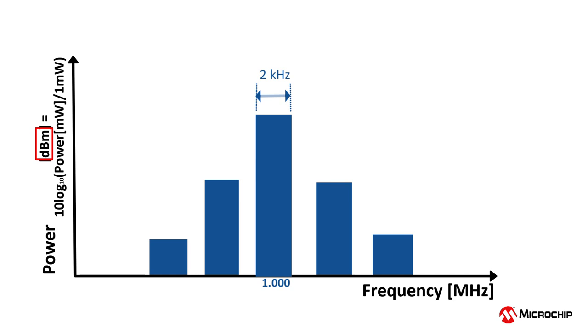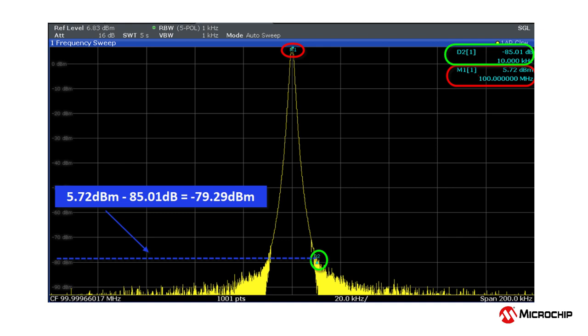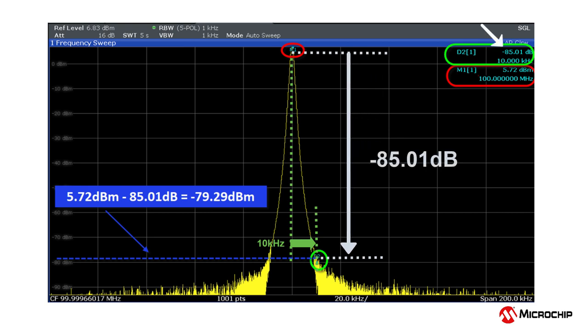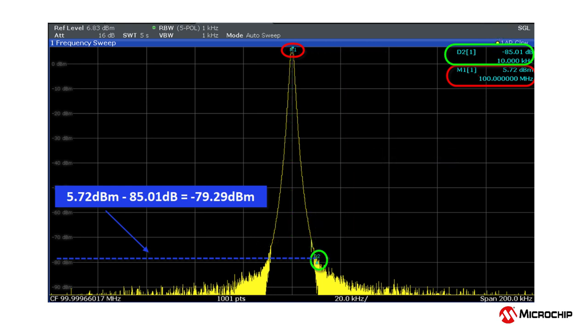Next, let us examine a real clock and the way it is displayed on a spectrum analyzer. We see most of the power is concentrated at 100 megahertz. The resolution bandwidth, or what I call the bucket size, is one kilohertz. At a 10 kilohertz offset from the 100 megahertz carrier, we can see the ratio of the power there versus at the 100 megahertz peak is negative 85.01 dB. Keep in mind that dBm is a measure of power, but dB is simply a way to express a ratio.